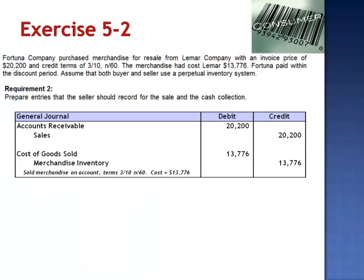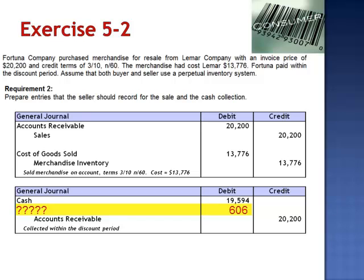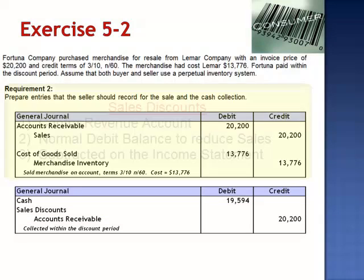Lamar then receives payment within the discount period. Debit cash for 97% of $20,200, which is $19,594. Credit accounts receivable for the entire $20,200, as Fortuna expects us to stop billing for the entire amount. We then need an additional debit to record the 3% discount. Since we no longer have the inventory, we can't use the inventory account. Instead, we use the contra revenue account: sales discounts.